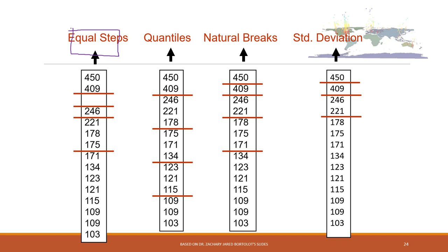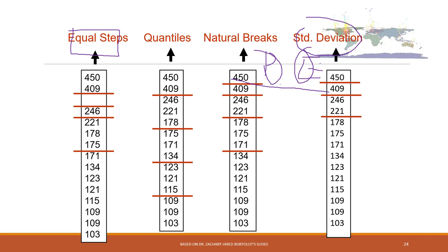If you want to compare different values such as population and employment rate — different numbers with different measures — you can use standard deviation to normalize the comparison.